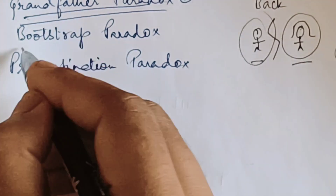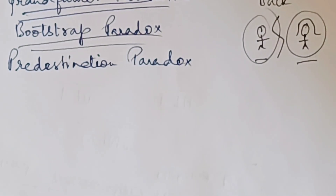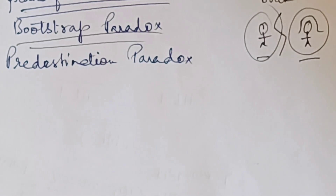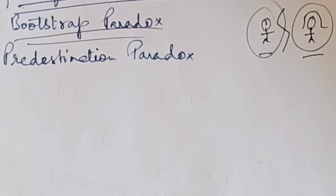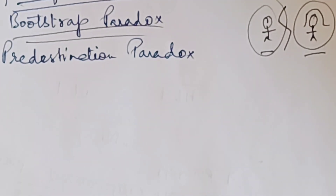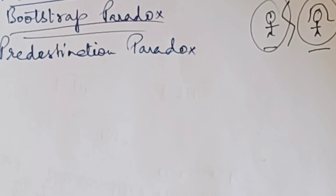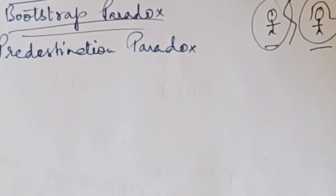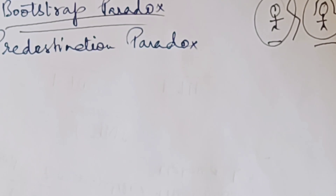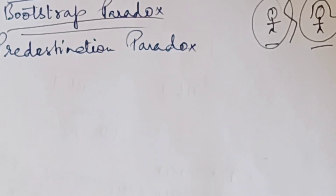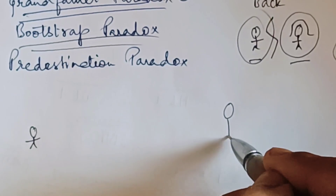Now let's come to the second one, the Bootstrap Paradox. Imagine you find a magic book with all the answers to your homework. You use the book, then go back in time and give the book to your younger self. The younger self can use the book and later grow up to become you. But where did the book originally come from?